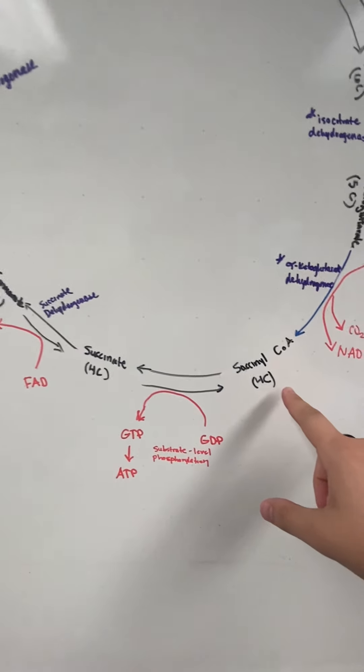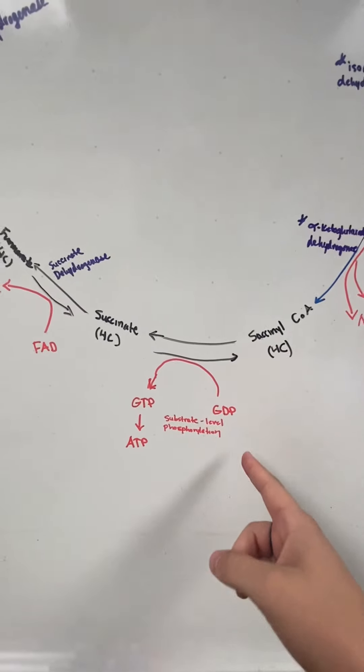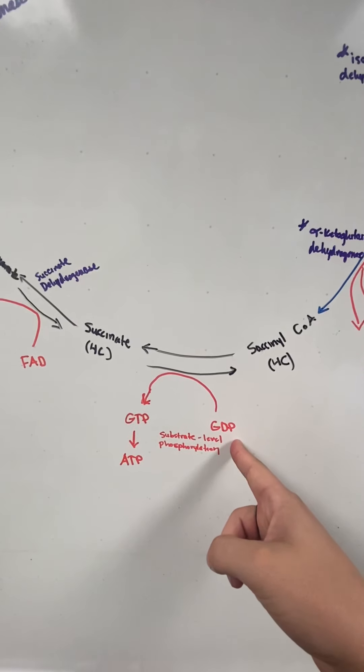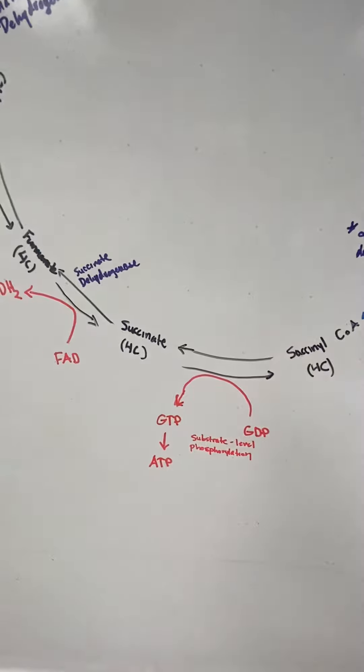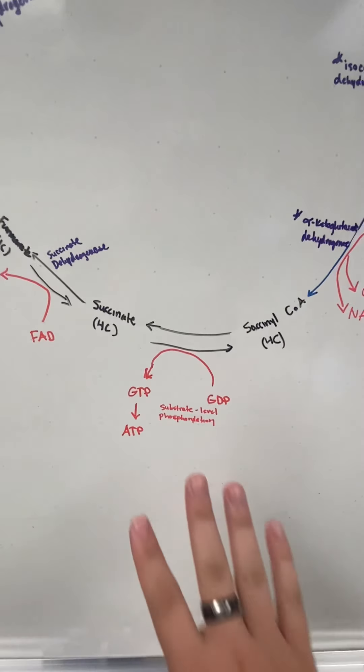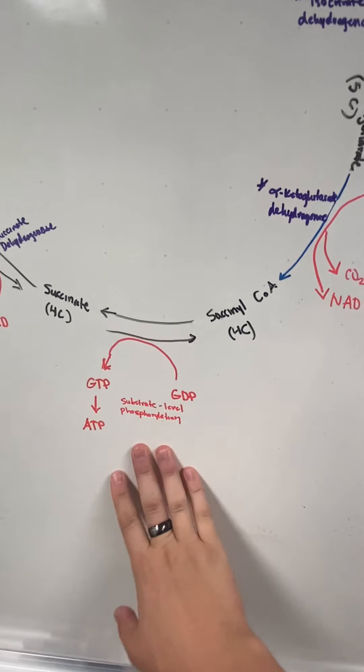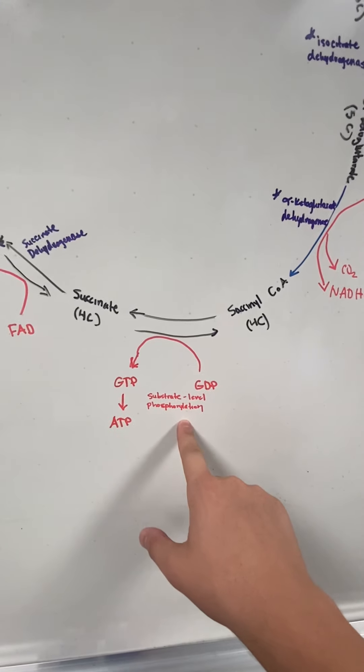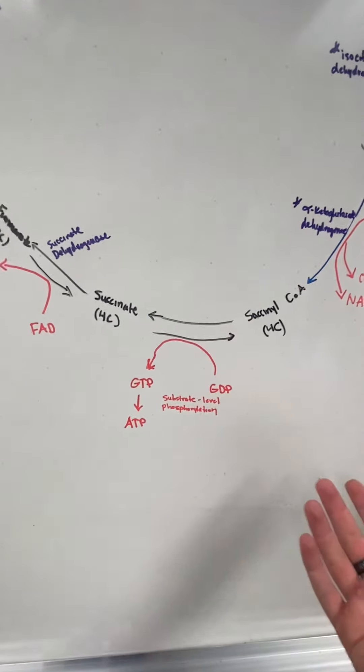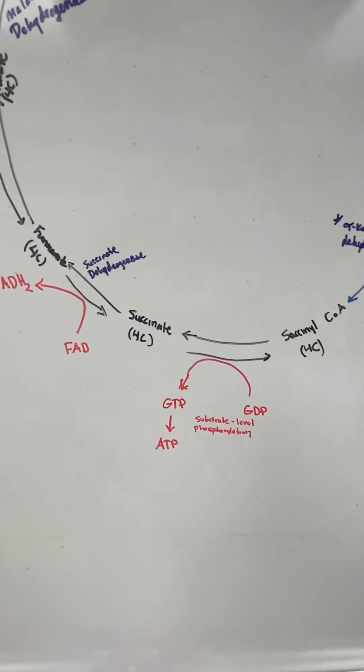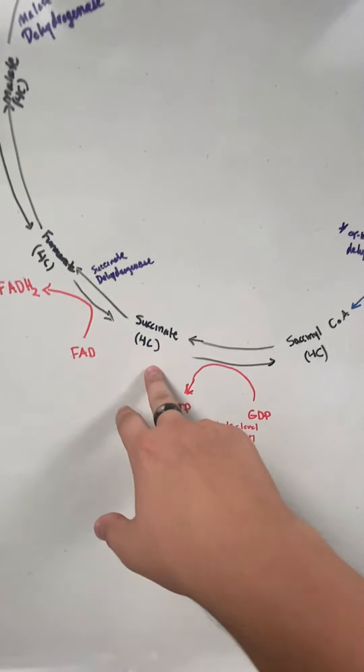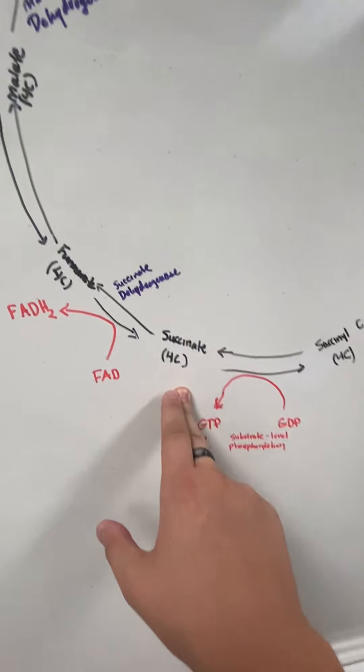From succinyl-CoA to succinate, we're going to go from GDP to GTP. This is the only step where we get ATP directly from this cycle. It's a substrate-level phosphorylation, which means we just get ATP. It's really GTP, but it's kind of the same thing. So we're still at that four-carbon unit.